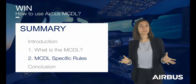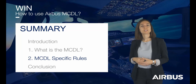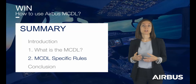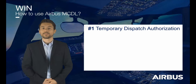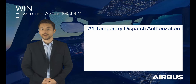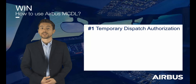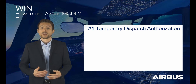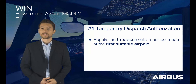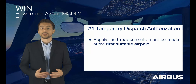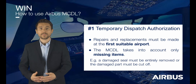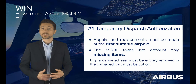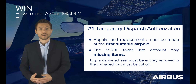So that was a quick overview of the MCDL definition and structure. Now let's move on to the specific rules to know when operating an aircraft under MCDL. The first important rule is about the temporary dispatch authorization under MCDL. The use of the MCDL enables the operator to temporarily operate the aircraft without specific parts, but the items can only be missing for a limited period of time. When not specified in the MCDL, repairs or replacements must be performed at the first suitable airport. In addition, remember that the MCDL only considers missing items — for example, the aircraft dispatch with a damaged seal is not permitted in the MCDL. The damaged seal must be entirely removed or the damaged part must be cut off.